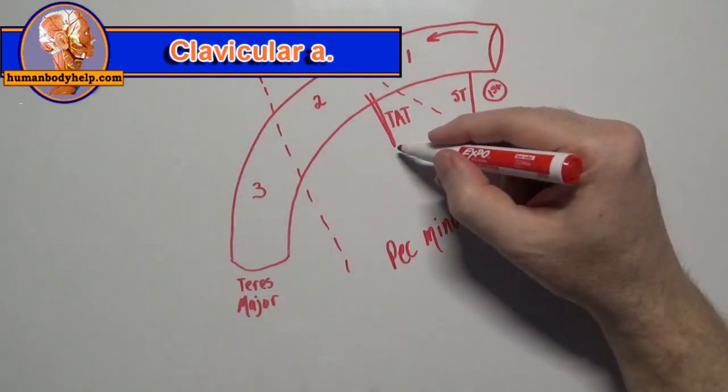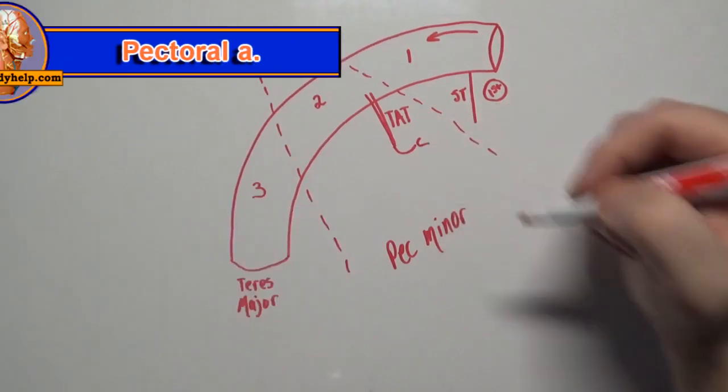The clavicular artery, running toward the sternoclavicular joint to supply it. The pectoral artery, which runs with the lateral pectoral nerve under the pec major.